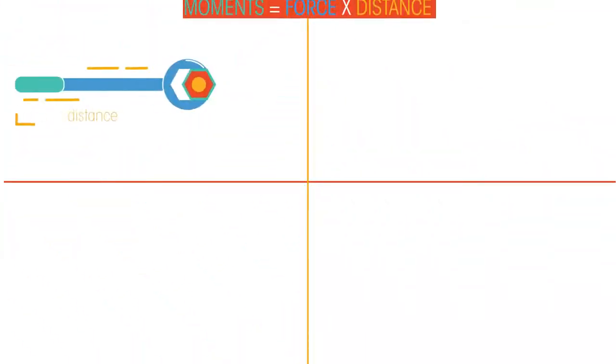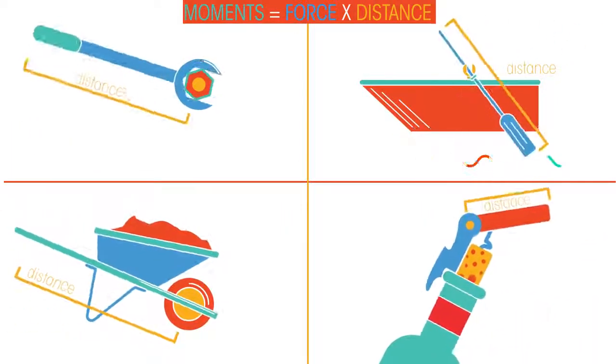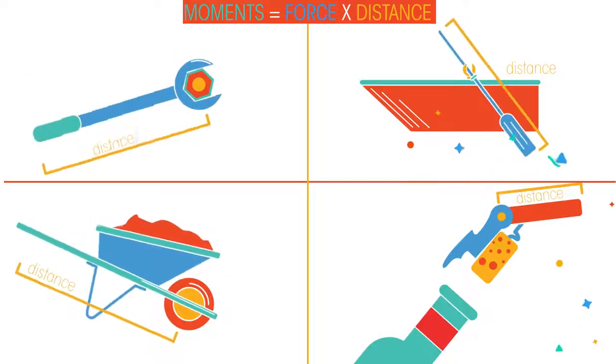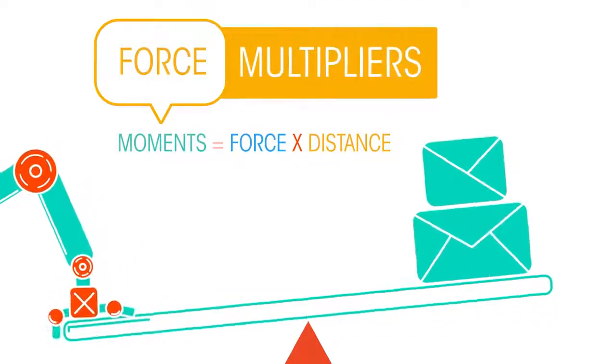Levers are simple machines or mechanisms that make work easier to do. They use moments to reduce the force needed to perform a task. Levers are sometimes called force multipliers.